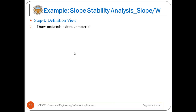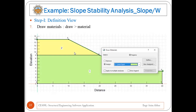Step seven is to draw materials. Go to Draw, then click on Materials — a window will appear. From the draw material menu, choose a specific material and then click on any region where you want to assign that material.